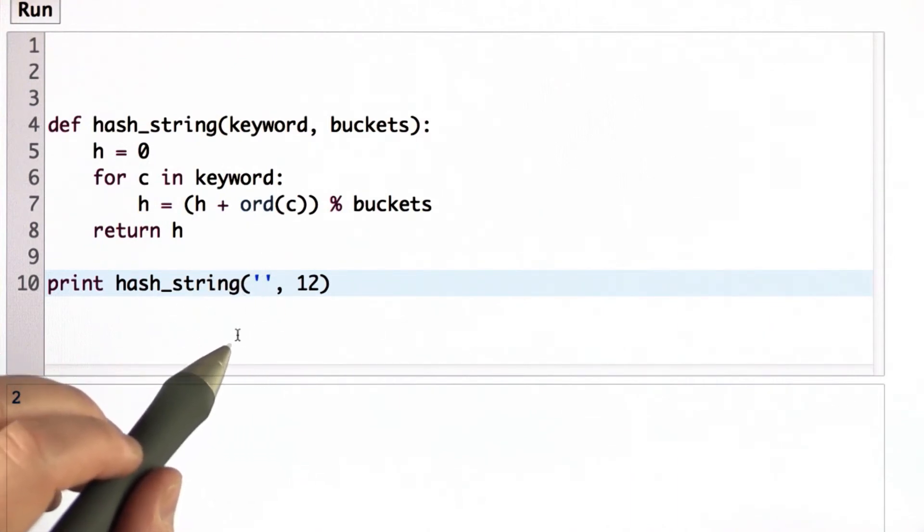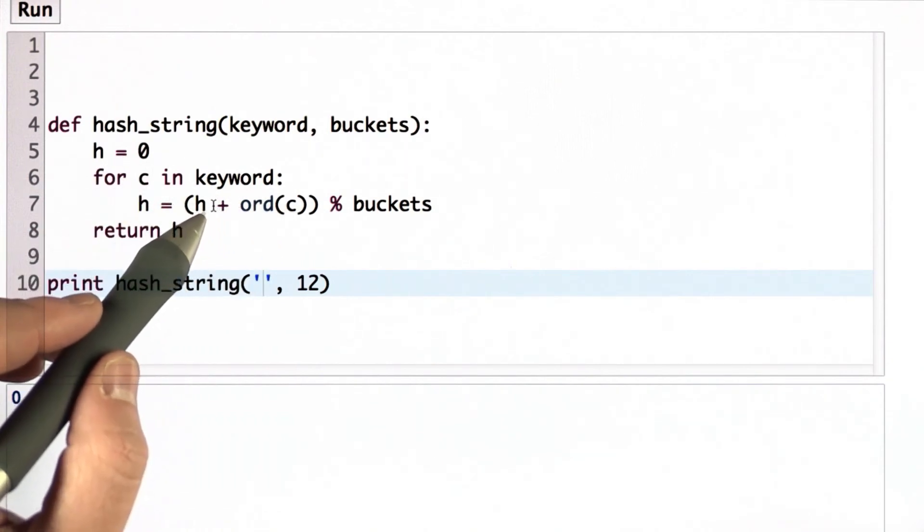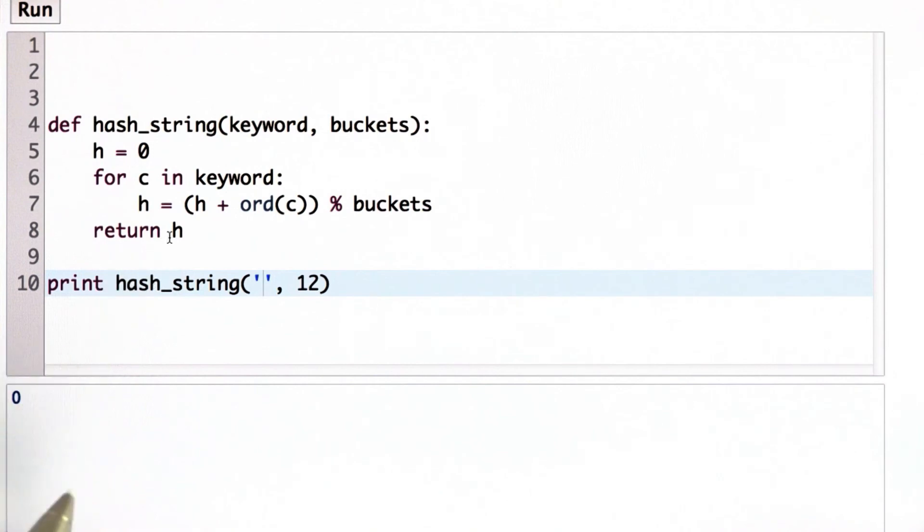Do you think our hash string function here will work on the empty string? So try to guess what the result should be before I run it. And then I will run it. And you see the result is 0, so no error. And it makes sense that the result is 0. We start with h is 0. When there are no characters in the string, we don't go through this loop at all. So h is still 0 when we return.